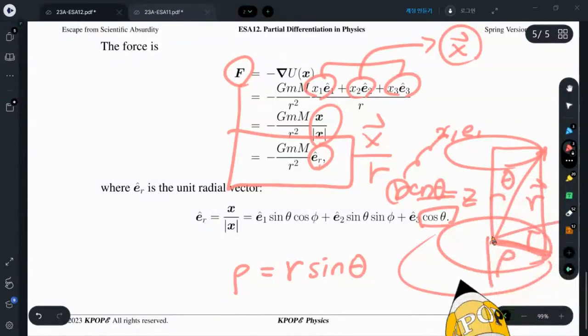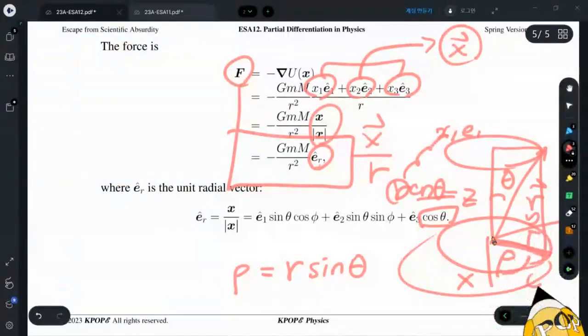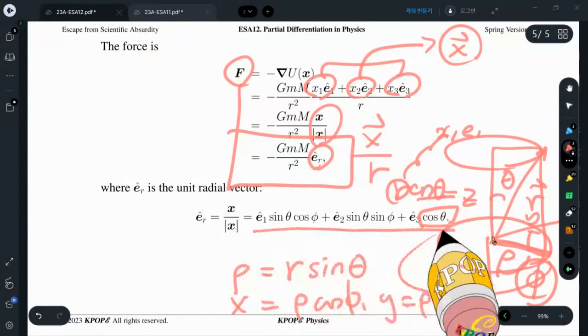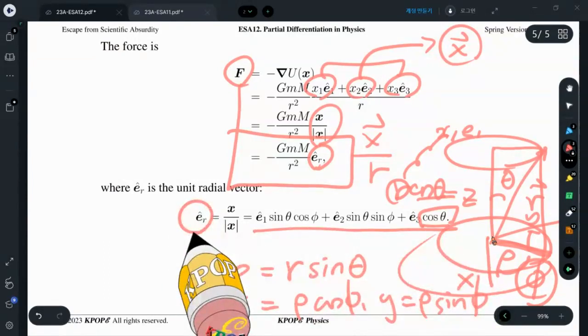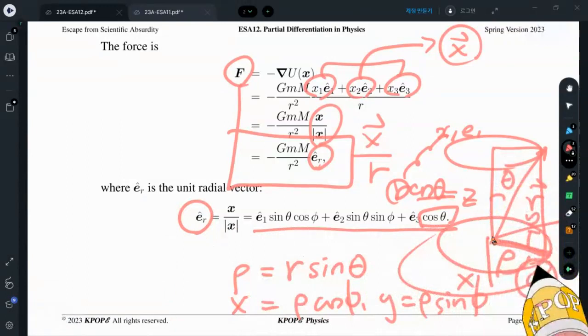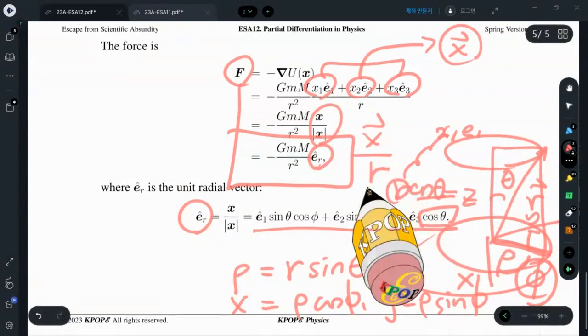You will have x-axis, y-axis. There is an azimuthal angle. So x component is rho cosine phi. Y component is rho sine phi. That's the reason why we have a unit radial vector has a polar angle and azimuthal angle dependence as it is.